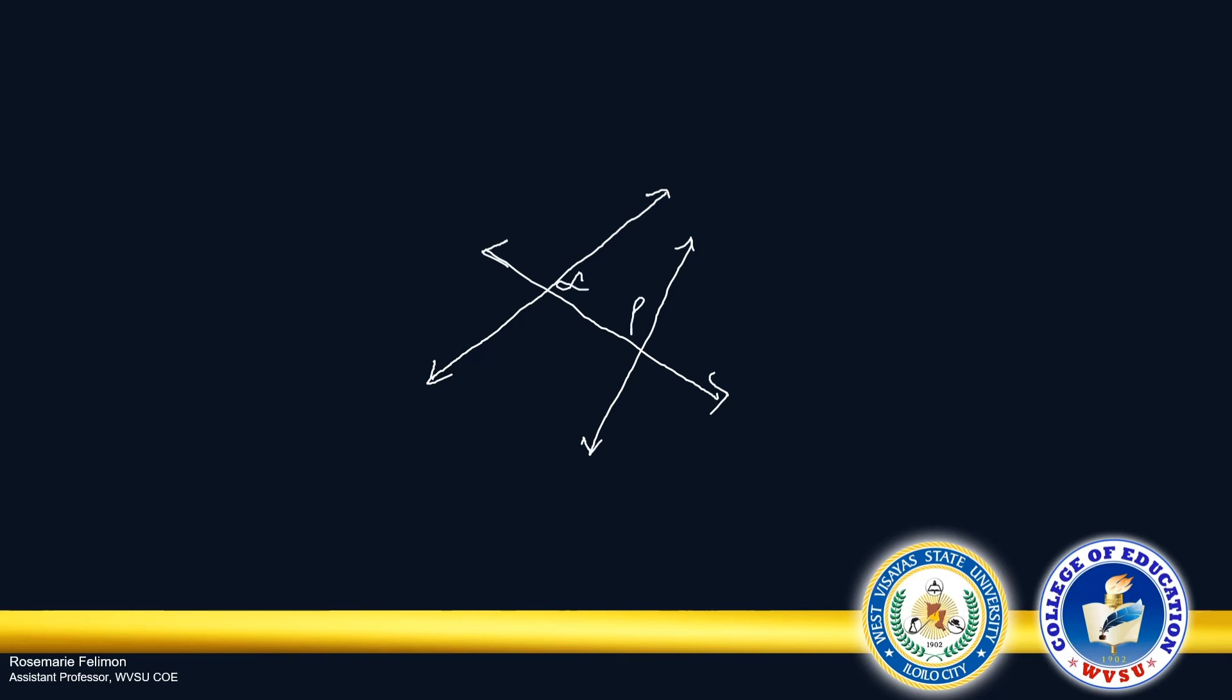And we have here two angles. When we add the measures of these two angles, the sum must be less than two right angles. It means that the sum must be less than 180 degrees.